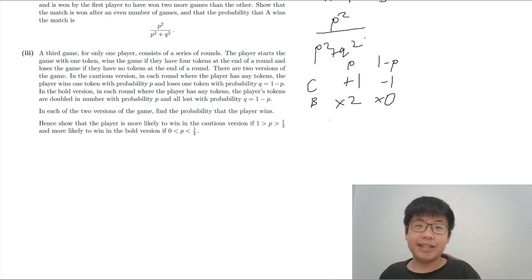Find the probability that the player wins. Now, how are we going to do this? The player has to win round 1 of the game to continue. Following the game, again, is equivalent to that in part 2 because you have to win 2 more games than the other. Then that means you will have 4 tokens, which actually means that the probability for the cautious is P cubed over P squared plus Q squared.